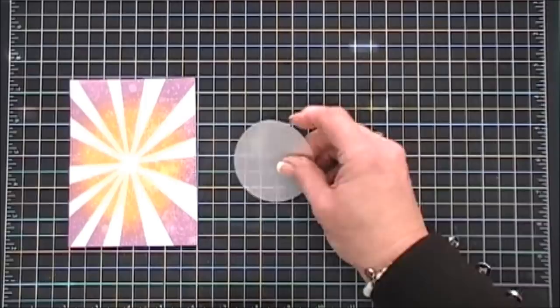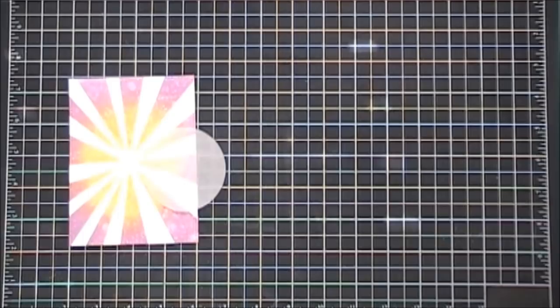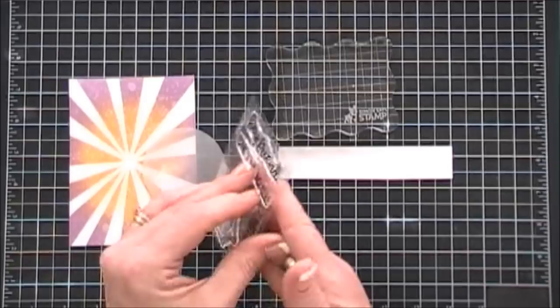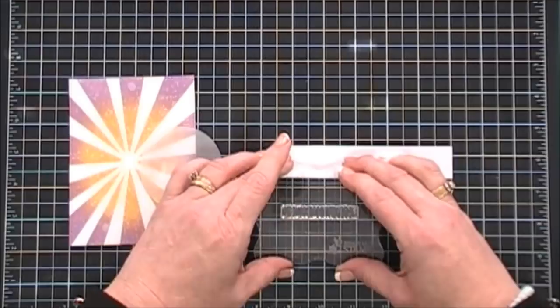For my sentiment, for this one, there's a few. There's Hey Friend, Long Time No See, and I Miss Your Face. I thought I Miss Your Face, it's adorable. So we're going to stamp that with some Versafine Onyx Black Ink on a piece of white cardstock.